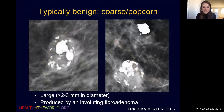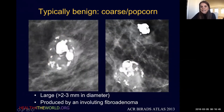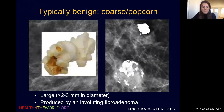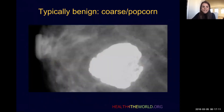We frequently see coarse or popcorn-like calcifications. These are large calcifications produced by involuting fibroadenomas. They tend to be peripheral and eccentric in these soft tissue masses. These masses can calcify to varying degrees — here we still see some of the soft tissue of the mass itself with coarse popcorn-like calcifications. The mass on top is the end stage of this process, where we no longer see the underlying soft tissue and just see the dense coarse popcorn-like calcification. These are benign fibroadenomas that get their name from resembling the shape of a piece of popcorn, and they do not require further imaging workup or biopsy.